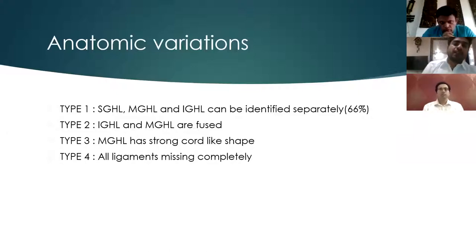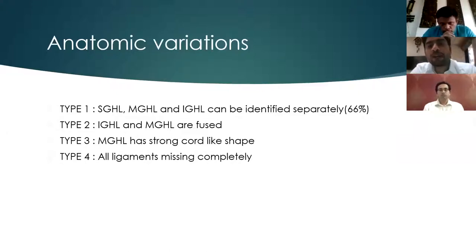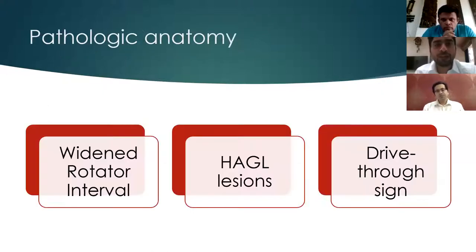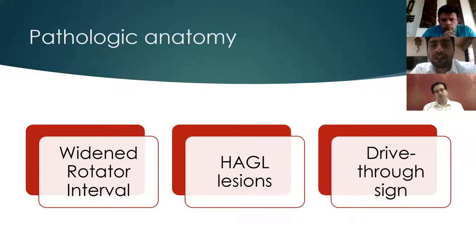Anatomic variance of glenohumeral ligaments: in type 1, all glenohumeral ligaments can be identified separately; in type 2, the inferior and middle glenohumeral ligaments are fused; in type 3, the middle glenohumeral ligament has a strong cord-like shape; and in type 4, all the ligaments are missing completely. Pathological anatomy includes a widened rotator cuff interval, HAGL lesion, or a drive-through sign.